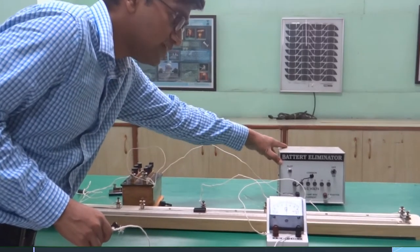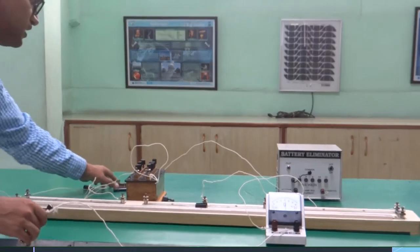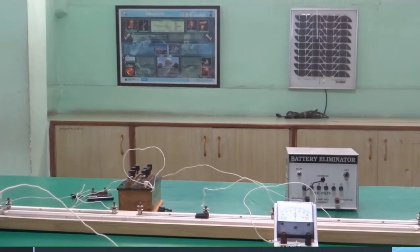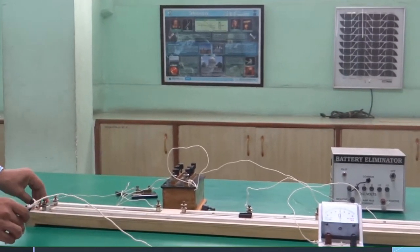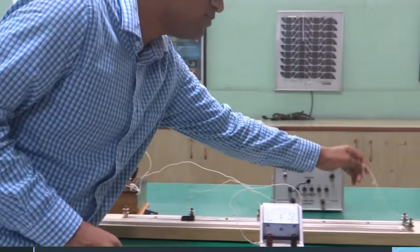This is the battery eliminator, the DC source. From here, in series we have attached a key and we have attached it to one end of the meter bridge, and the positive terminal goes to the second end.